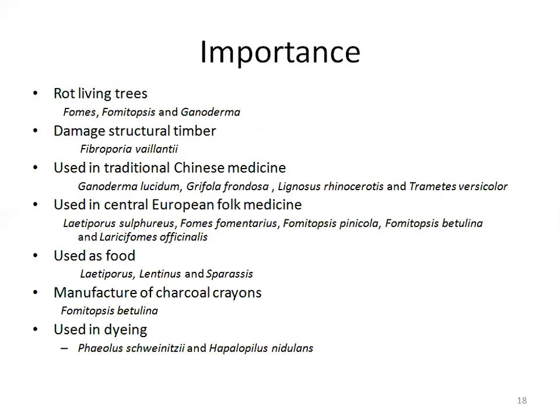Many wood decay fungi, for example those belonging to the genera Fomes, Fomitopsis, and Ganoderma, are pathogenic — they cause root rot of living trees and as a result have a very bad impact on forestry plantations. Several species, such as the mine fungus Fibroporia vaillantii, can rot and damage structural timber.